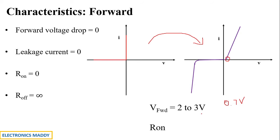Additionally, the on-state resistance of a power diode is higher than that of a normal diode, because the n- drift layer has been added to the structure. Each additional layer contributes some resistance, which is why the on-state resistance increases compared to a normal signal diode.